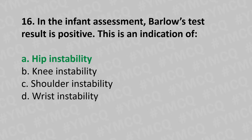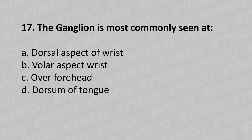Moving to our 17th question: the ganglion is most commonly seen at — option A dorsal aspect of the wrist, option B volar aspect of the wrist, option C over the forehead, option D dorsum of the tongue. And the answer is option A dorsal aspect of the wrist.